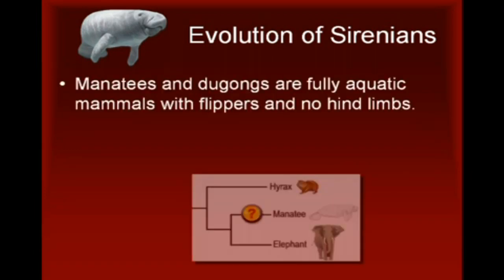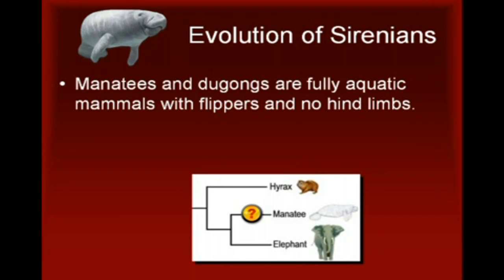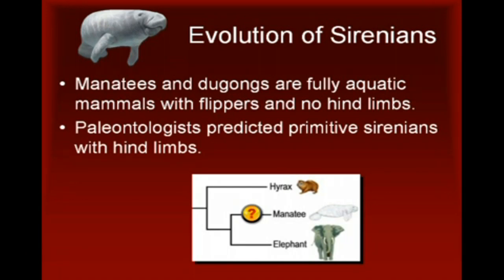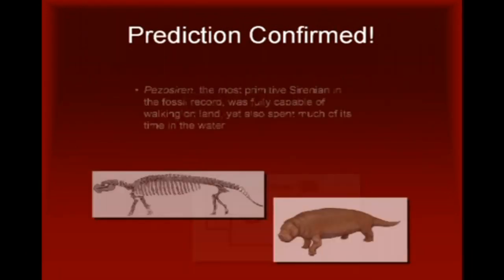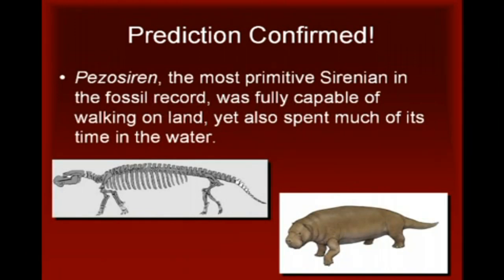Our final example involves the evolution of Sirenians, the group of mammals that includes manatees and dugongs. Sirenians are fully aquatic mammals with flippers and no hind limbs. Morphological and molecular evidence indicates that, among existing species, the Sirenians are most closely related to elephants. Based on this evidence, paleontologists predicted the existence of primitive Sirenians with hind limbs. This prediction was confirmed by the unearthing of Pezosiren, the oldest and most primitive Sirenian in the fossil record, which was found in 50 million year old deposits from Jamaica. Pezosiren was fully capable of walking on land, with four well-developed legs and a long tail. However, the details of its nasal opening and its thick ribs suggest that Pezosiren also spent much of its time in water. This evidence makes Pezosiren a clear intermediate form between land animals and fully aquatic Sirenians.